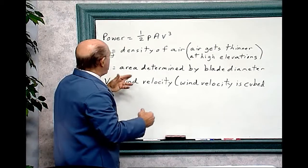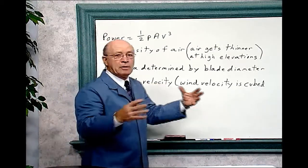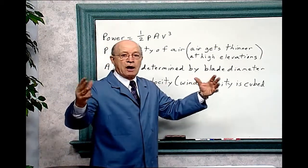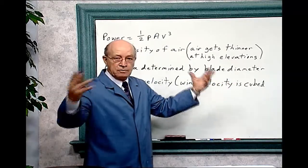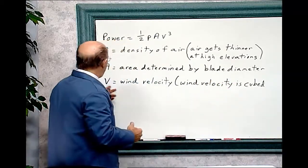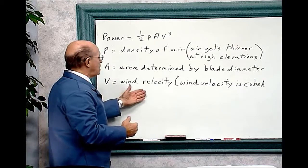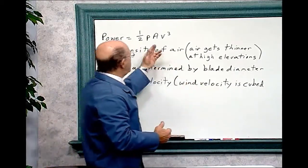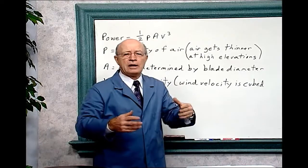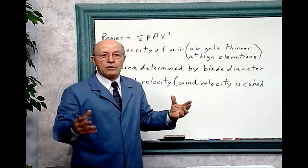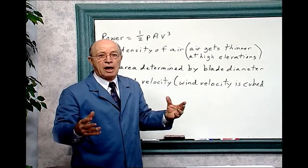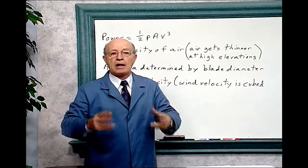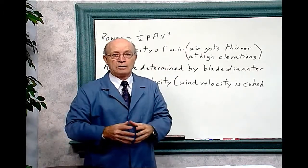A equals the area determined by the blade diameter — how big is the blade and how much area does it have? And v is the wind velocity. I just want to show you that algebra is used all over, and if you're going to work on wind turbines, you have to know algebra to work in that kind of field.